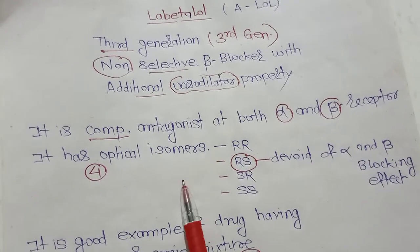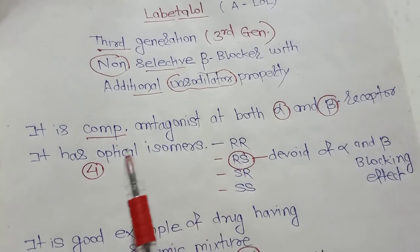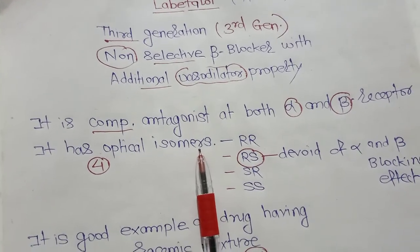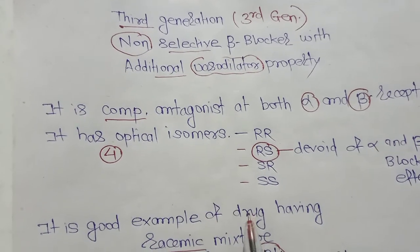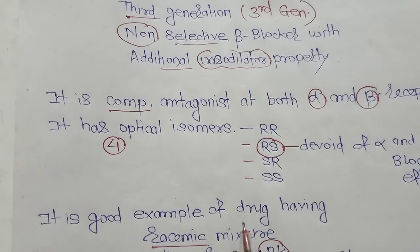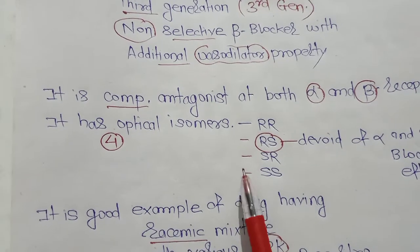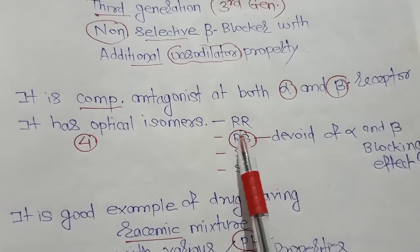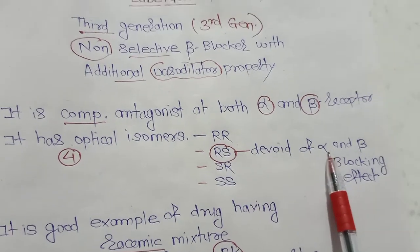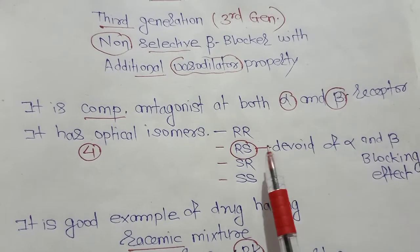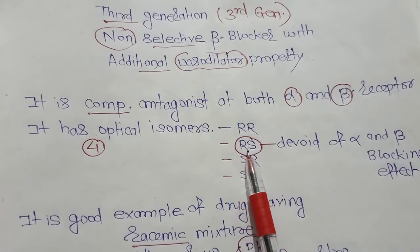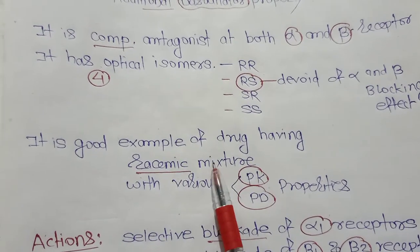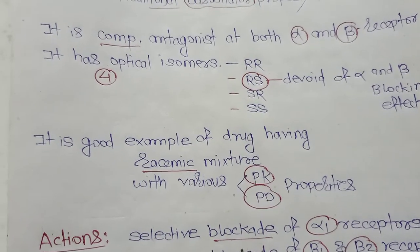One unique property of Labetalol is that it has four optical isomers — it is a good example of a drug having a racemic mixture. The four optical isomers are RR, RS, SR, and SS. The RS optical isomer is devoid of any alpha and beta blocking effect, meaning no alpha or beta blocking effect in this RS isomer.